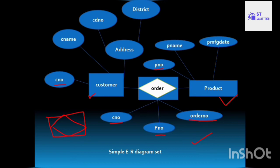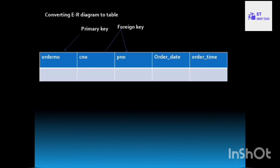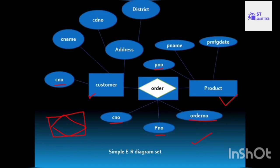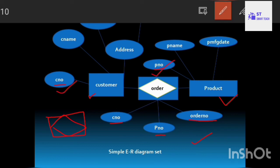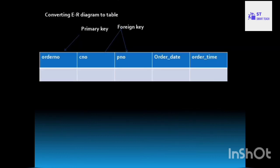To convert the order entity into a table, the table name is order. Order number is the primary key. Customer number and product number are foreign keys because they match the primary keys of the customer and product tables respectively. Order date and order time are the other columns in the table.